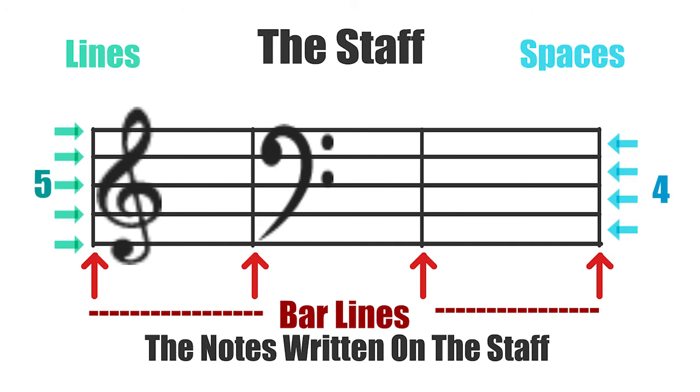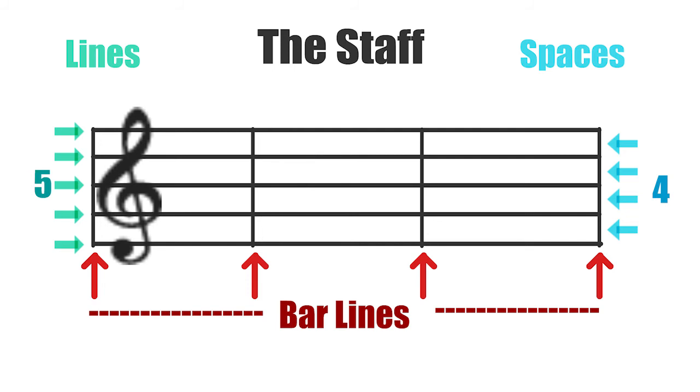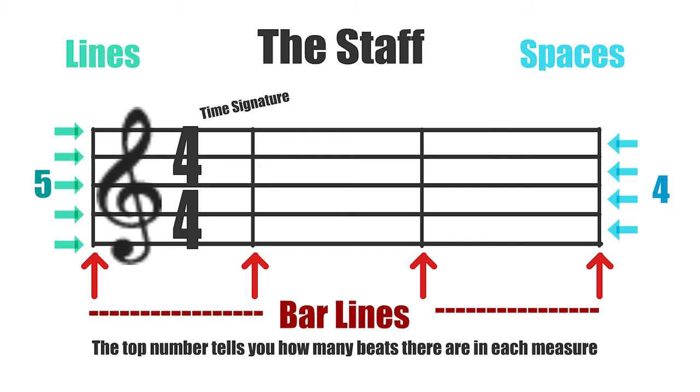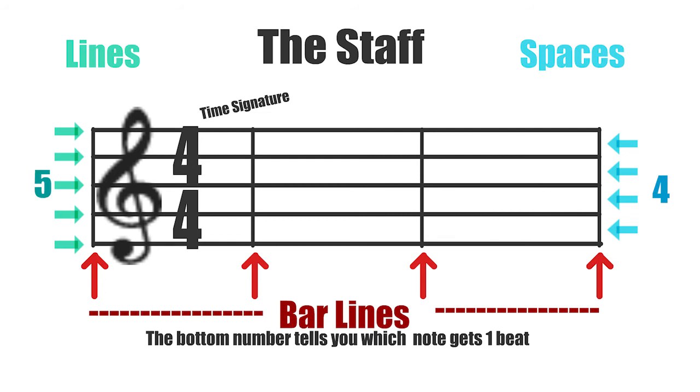The time signature has two numbers, one on the top, one on the bottom. The top number tells you how many beats there are in each measure. The bottom number tells you which note gets one beat.